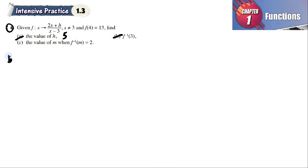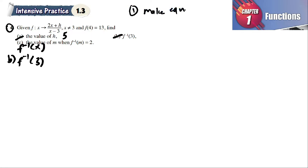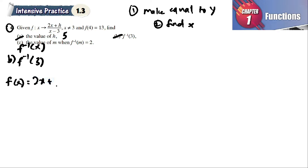Part b: find f⁻¹(3). To get f inverse, we must find the inverse function first. To get the inverse function, we make f(x) equal to y and then find x. So f(x) = (2x + 5) / (x - 3), since h = 5.